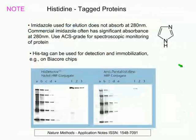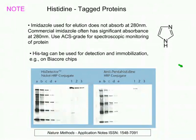Histidine-tagged proteins are useful for monitoring and detection. A word about imidazole: it shouldn't absorb, but most commercial grades of imidazole have very high absorbance at 280 nm, which is problematic if you use spectroscopy for looking at your proteins. Normally you have to get rid of it. The histidine tag itself can be used for immobilization and detection on gels.